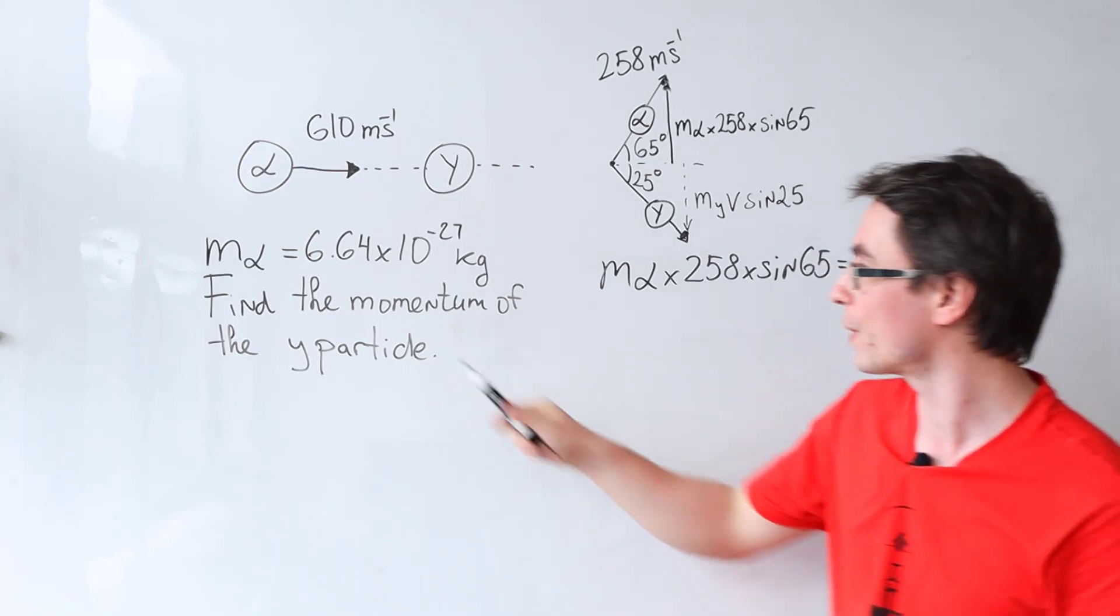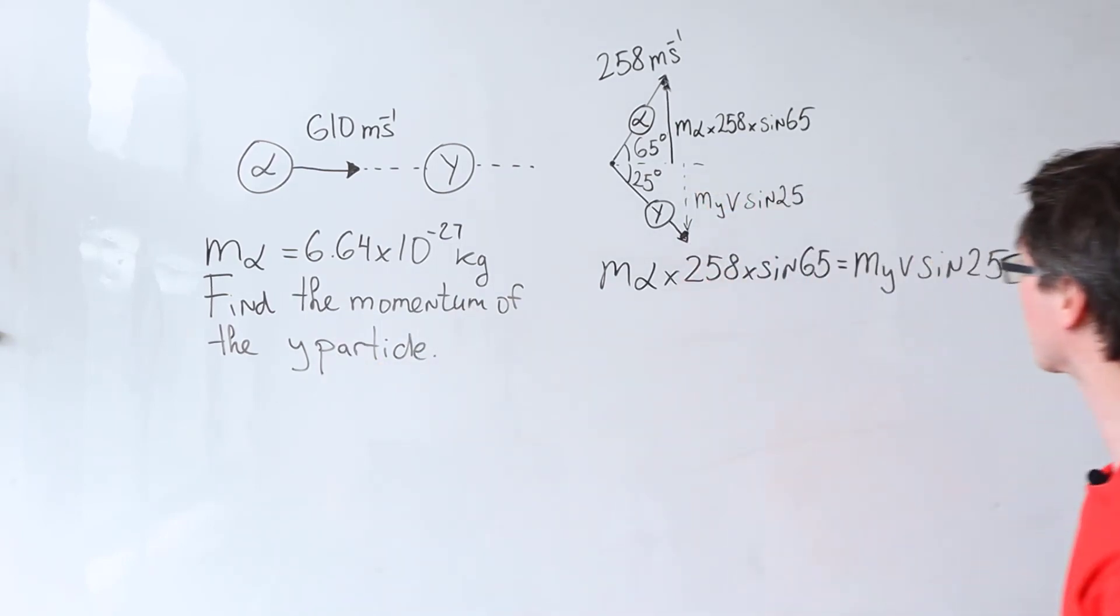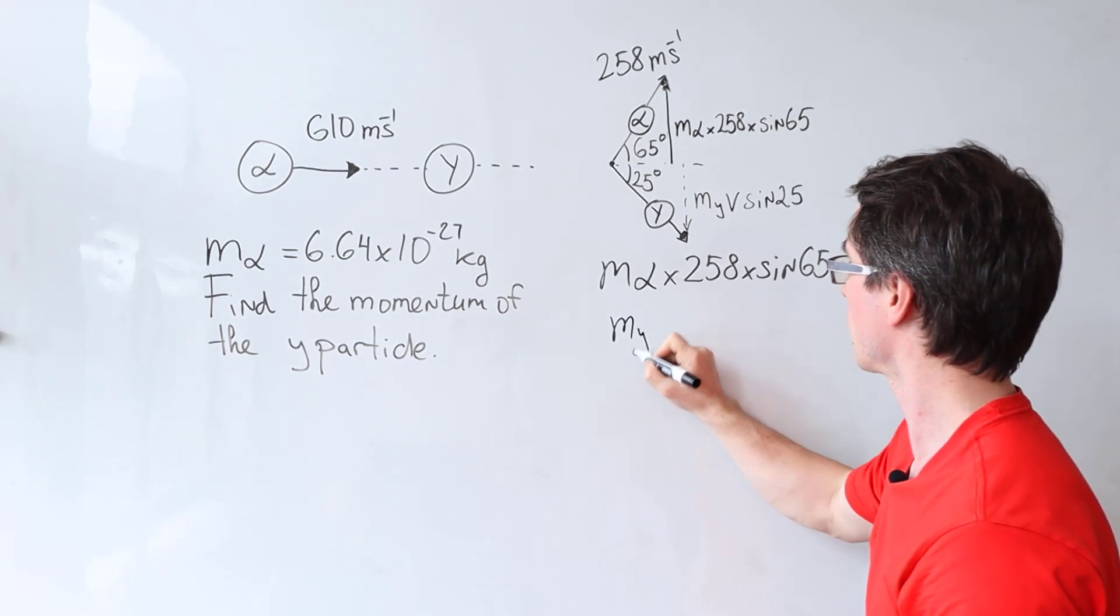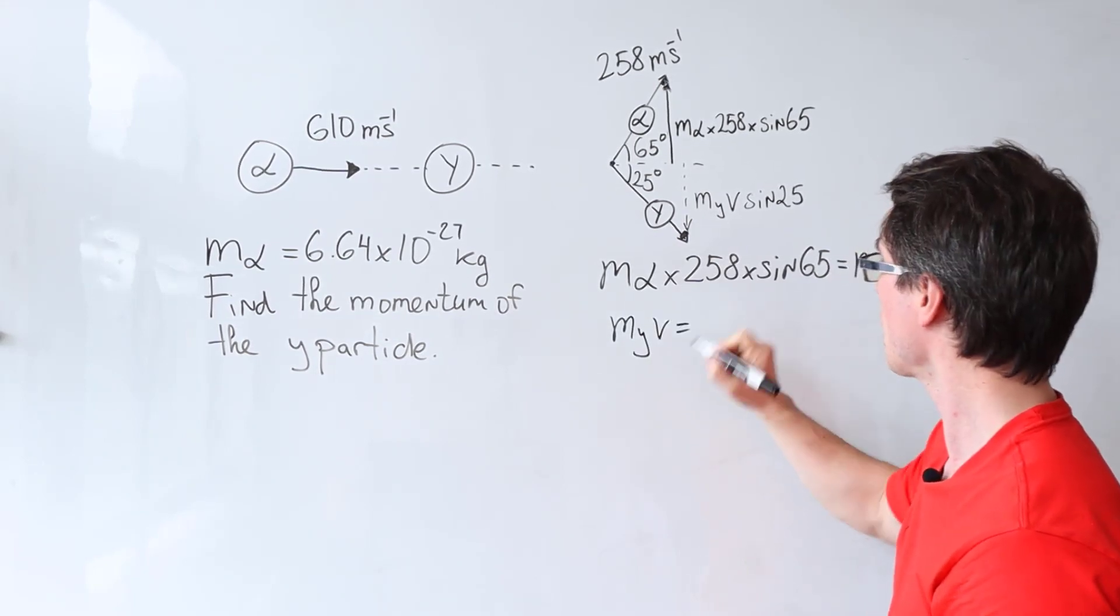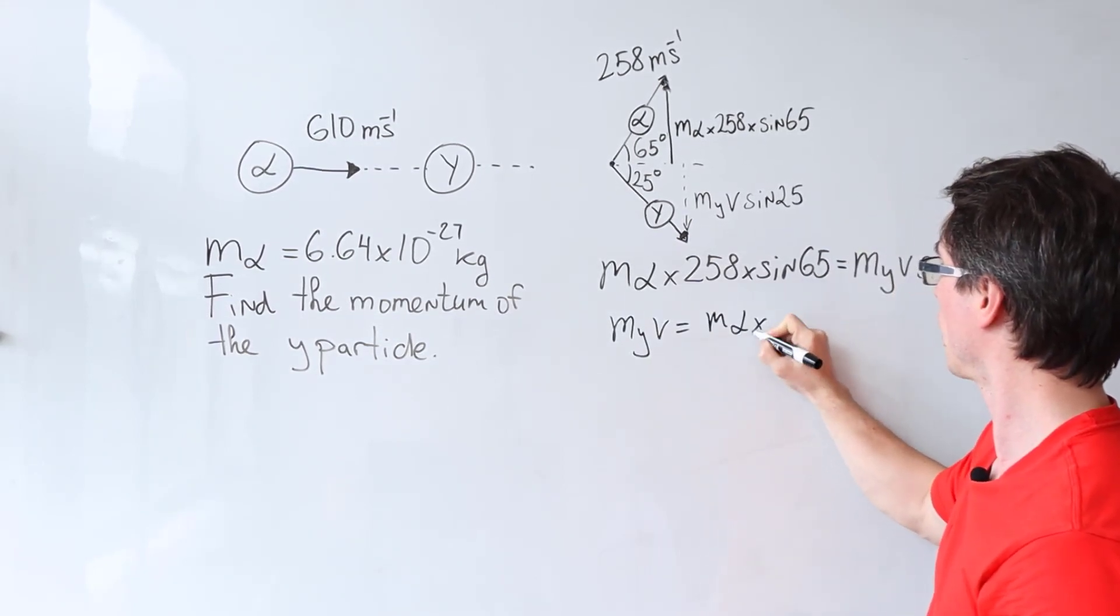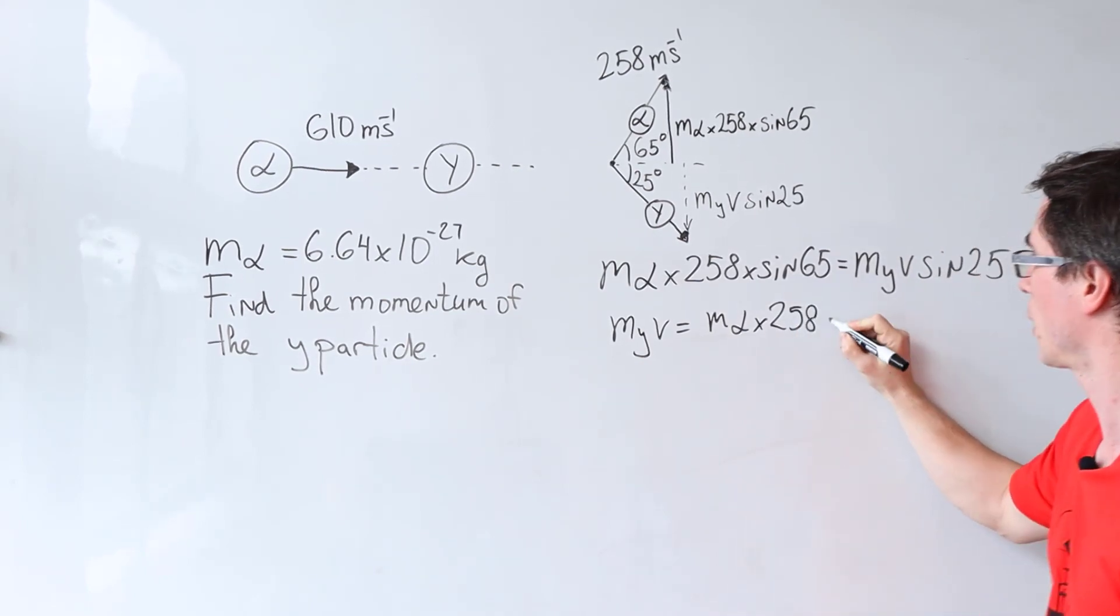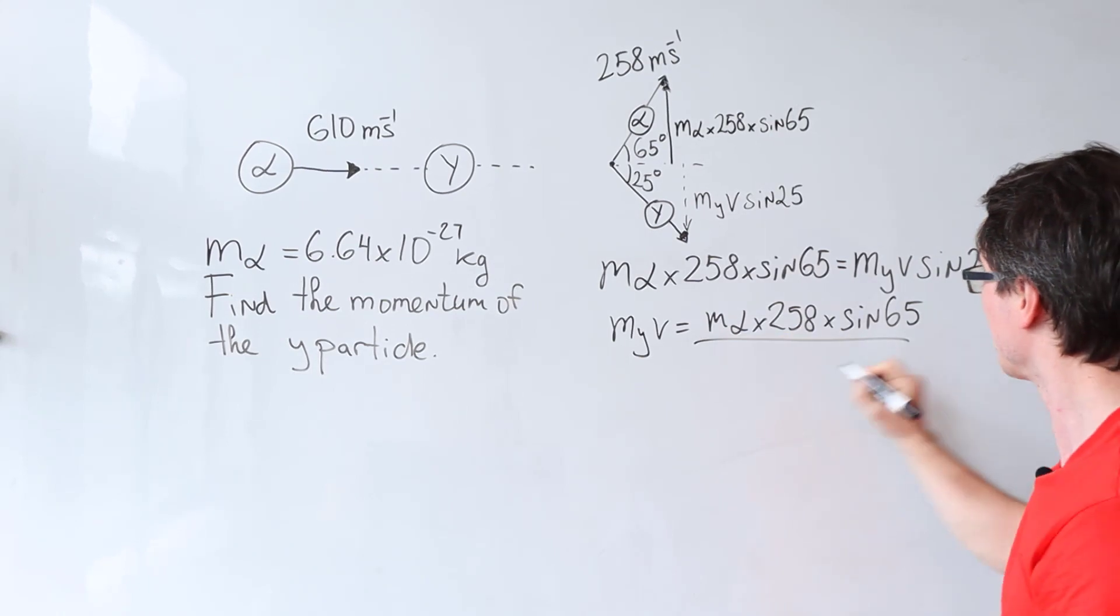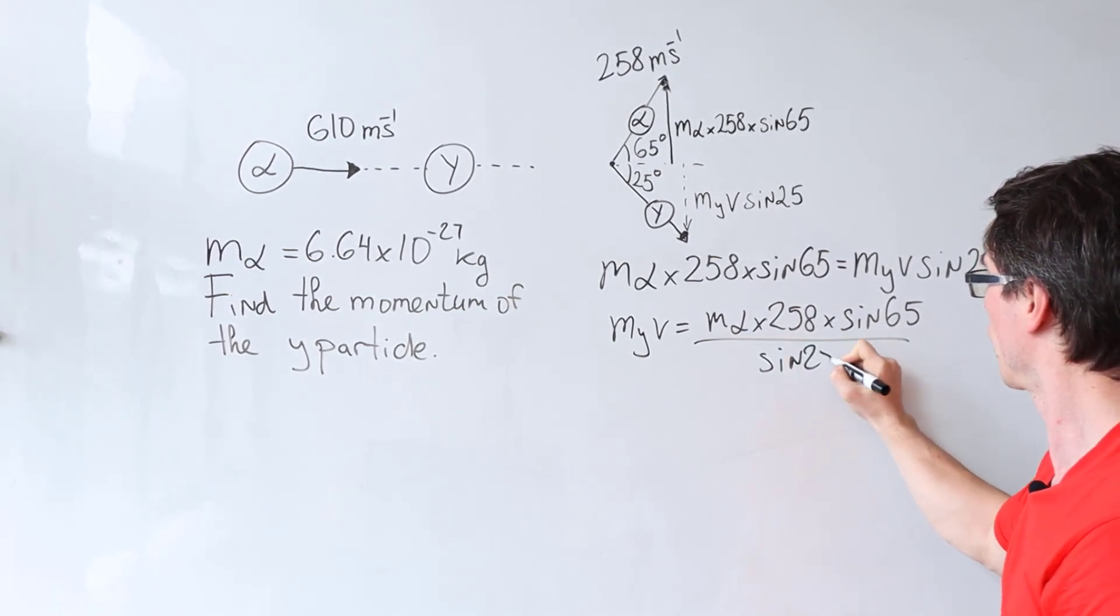Notice that what we're really looking for is the momentum of the y particle. Well that's just its mass times its velocity, so I can rearrange this equation for myv and what I'm going to get is that myv will be equal to the mass of the alpha particle times 258 multiplied by the sine of 65 divided by the sine of 25.